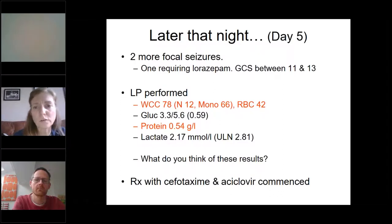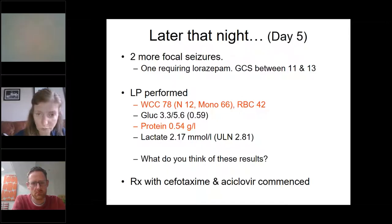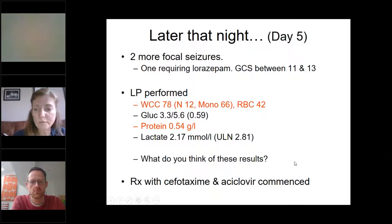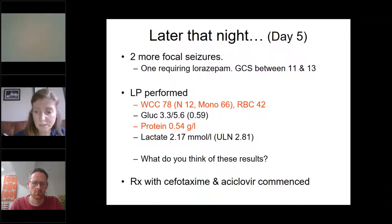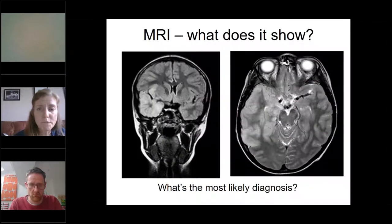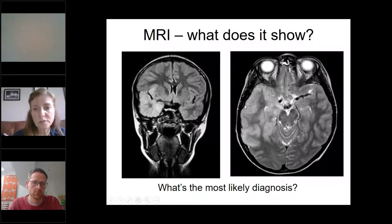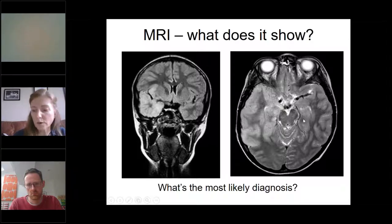He now got his lumbar puncture, which was very abnormal — high white cell count and elevated protein, confirming a pleocytosis in the CSF, meaning definite brain infection or inflammation. He was treated with cefotaxime and acyclovir. His MRI the next day was very abnormal, showing diffuse swelling throughout the temporal lobe on the right, visible on both axial and coronal sequences. This appearance is very typical — once you've seen it, you won't forget it. The most likely diagnosis is HSV encephalitis.